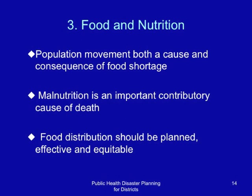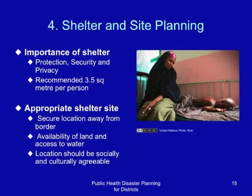Shelter and site planning is an important aspect of complex emergencies, especially where large numbers of people are displaced. Shelter is important for protection, security, and privacy. It is recommended that each person has 3.5 square meters of available space. Appropriate shelter sites should be selected — in a secure location away from the border, with availability of land and access to water, and the location should be socially and culturally agreeable to the affected persons.